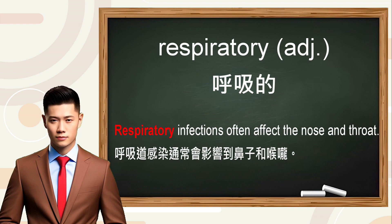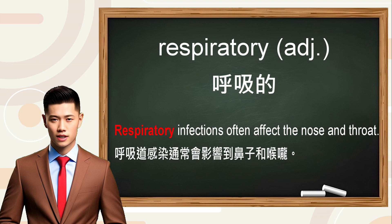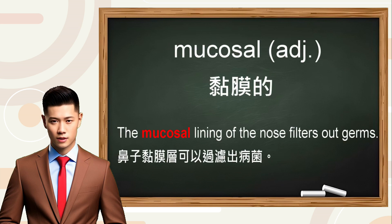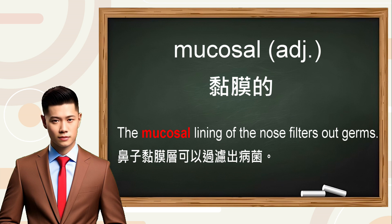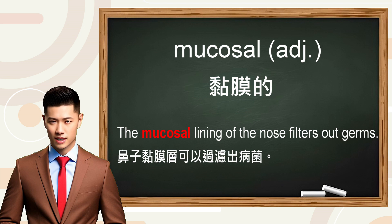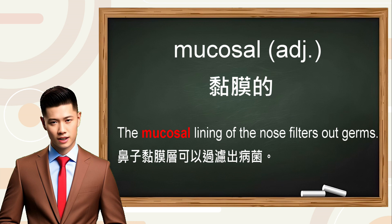Respiratory，这个单字的意思是呼吸的，描述与呼吸或呼吸系统有关的东西。例如：Respiratory infections often affect the nose and throat.（呼吸道感染通常会影响到鼻子和喉咙。）Mucosal，这个单字的意思是黏膜的，与身体黏膜相关的。例如：The mucosal lining of the nose filters out germs.（鼻子黏膜层可以过滤出病菌。）